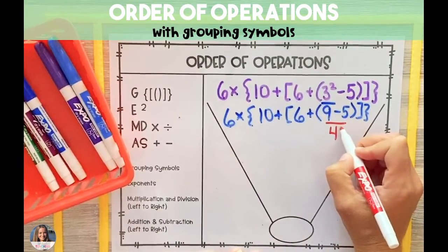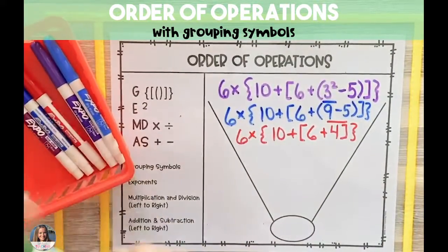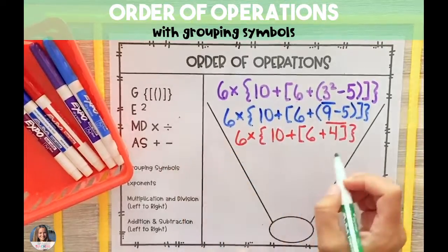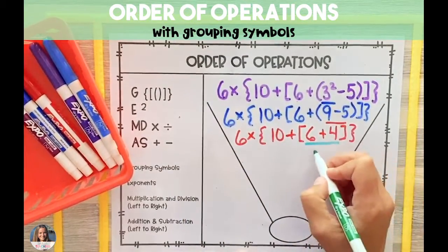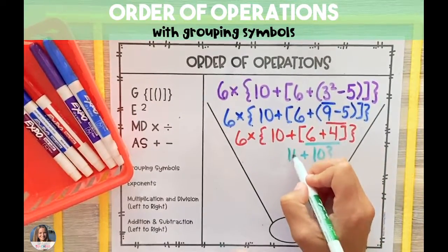We'll write our answer of 4 below it, and then bring down the rest of the problem. Now that our parentheses are solved, we're going to work out to the next grouping symbol, which is brackets. 6 plus 4 is 10, and then we again bring down the rest of the problem.